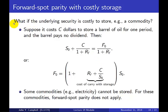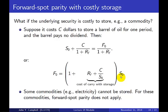What if the underlying security is costly to store? This doesn't arise for financial assets, but it does for commodities. Consider a forward contract on oil: suppose it costs c dollars to store a barrel of oil for one period and the barrel pays no dividend. Then the parity relationship says S plus the discounted cost of storage equals the discounted forward price, or rearranging, the forward price equals (1 + RF + storage cost c divided by spot price) times the current spot price. In other words, storage increases the cost of carry, just as dividend yields reduce it.